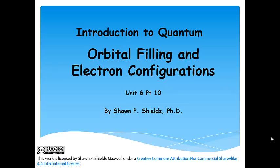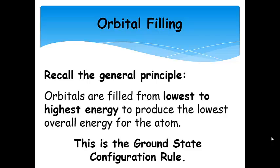Orbital filling and electron configurations. We are finally ready to cap off this whole unit. We're going to talk about orbital filling before we talk about electron configurations, and in a way they'll cross over a little bit. We'll begin with orbital filling using electron energy diagrams and gradually add in electron configurations. The general principle is that orbitals are filled from lowest to highest energy to produce the lowest overall energy state for the atom, which is the ground state.